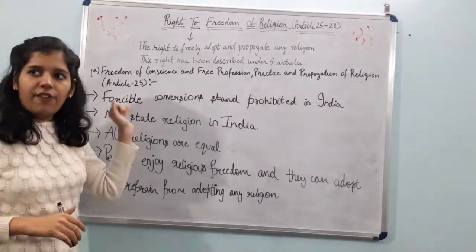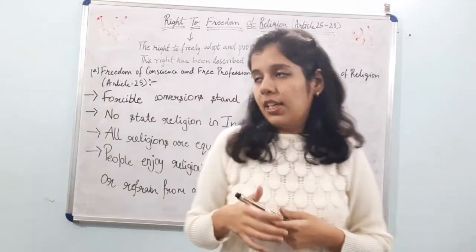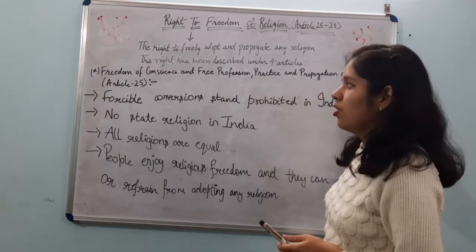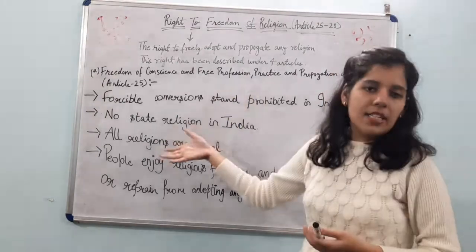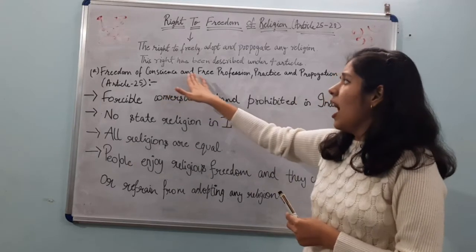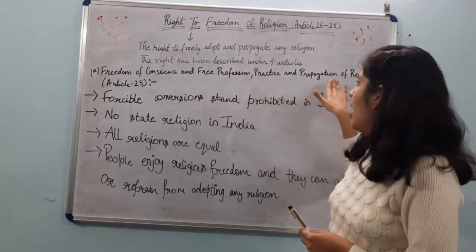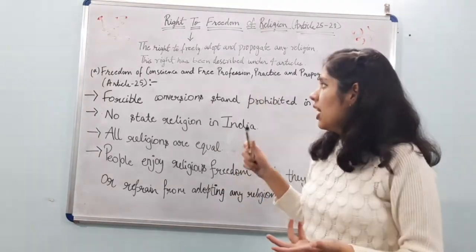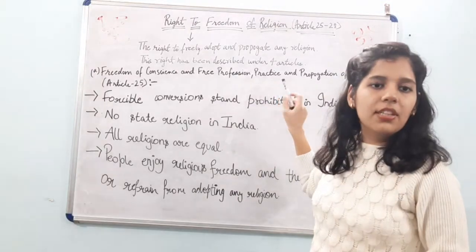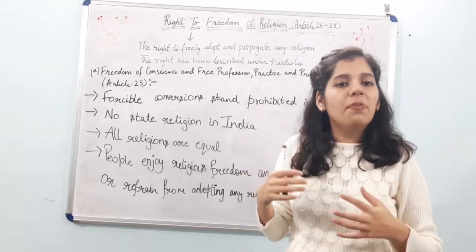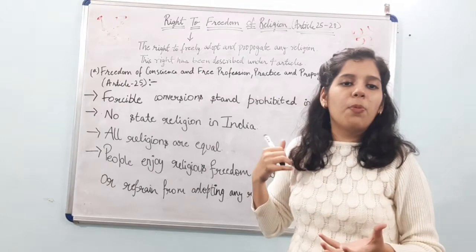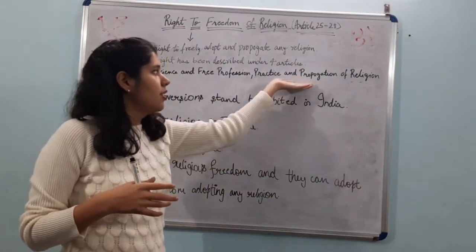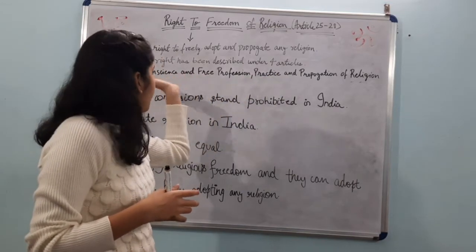Article 25 is about freedom of conscience and free profession, practice, and propagation of religion. This means you have the freedom to adopt any religion according to your conscience, and you can freely propagate or practice any religion.